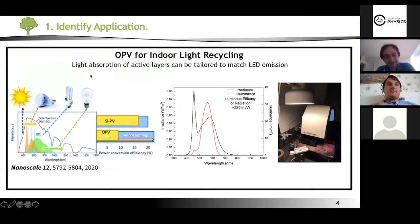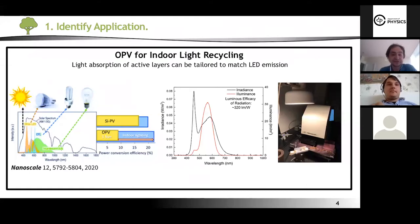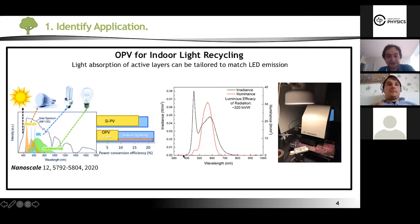In our lab we work on indoor applications. Indoor is very different from outdoor because outdoors the sun has a very broad spectrum and the highest energy. For indoor applications, the spectrum lies between 400 to 800 nanometers, and the power is around 1 milliwatt per centimeter square. We need to identify which materials we can use for this spectrum between 400 to 700 nanometers, as shown in the spectrum on the right, measured from the indoor light source and our measurement setup.